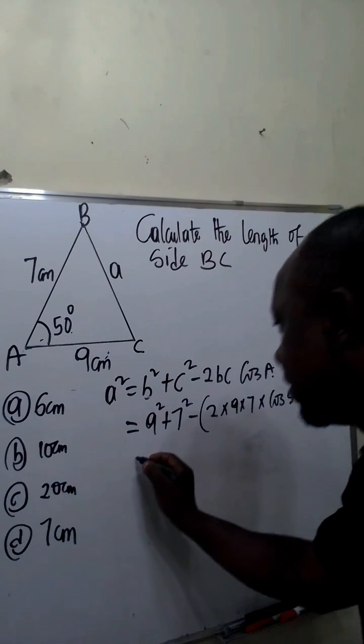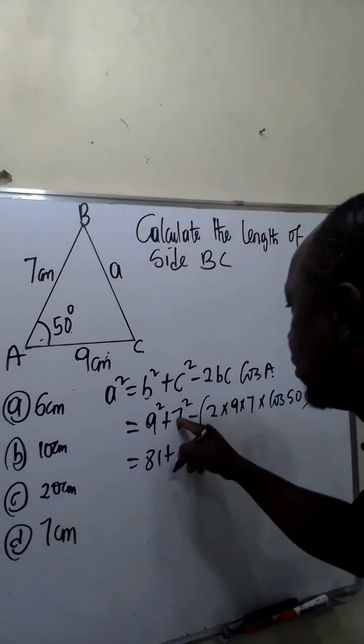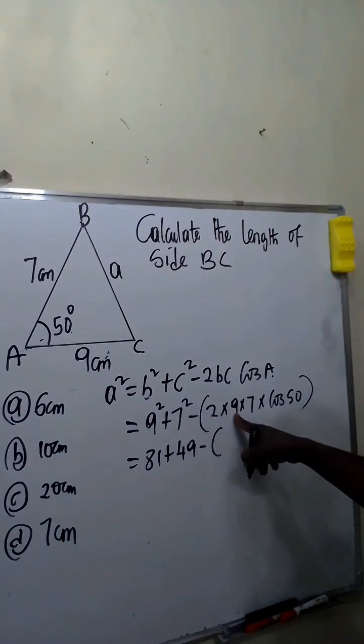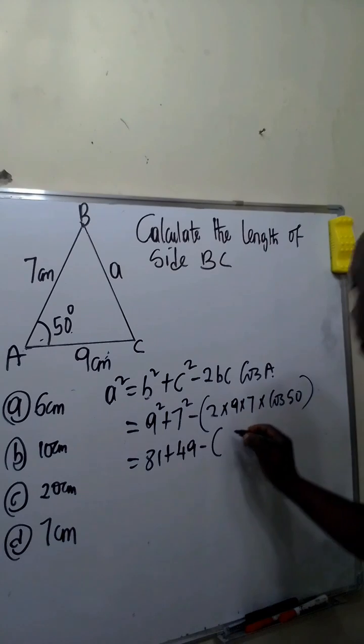9² is the same as 81, plus 7² is 49, minus 2 times 9 is 18. 18 times 7 is 126.